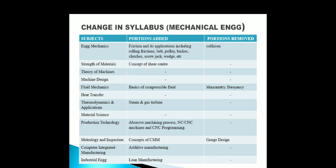In Industrial Engineering, lean manufacturing has been included as a new subject with nothing removed. So lean manufacturing is now one of the industrial engineering subjects in GATE 2021. This is all about the Mechanical Engineering GATE 2021 syllabus changes.